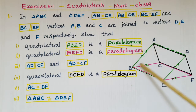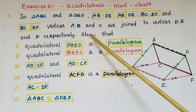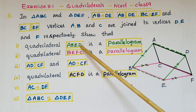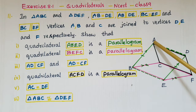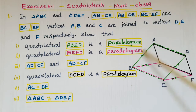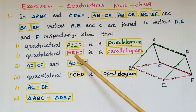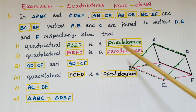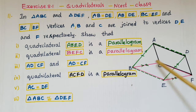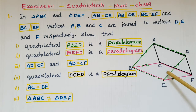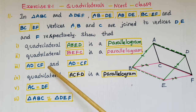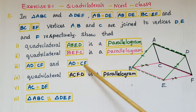The triangle ABC vertices are joined to triangle DEF. We have to show that: first, quadrilateral ABED is a parallelogram; second, quadrilateral BEFC is a parallelogram; and third, AD is parallel to CF and AD is equal to CF.